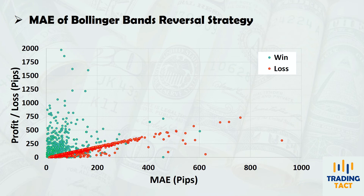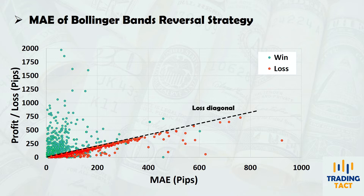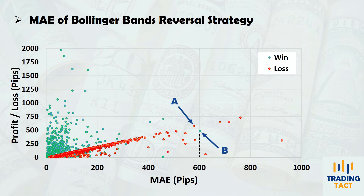For every backtest trade, the chart displays the closed profit or loss in relation to the MAE during the trade. Green dots are winning trades, while red dots are losing trades. Notice that the vast majority of winning trades have low MAE values — winning trades are usually profitable quickly, experiencing only small floating losses. Also notice the loss diagonal consisting of losing trades; these trades were exited close to their lowest equity point. Looking at trades A and B: although located in the same area, they progressed very differently. Trade A had a MAE of 580 pips and was eventually closed at a 580 pip loss. Trade B had a MAE of 600 pips but managed to recover, eventually closing with a 500 pip win.